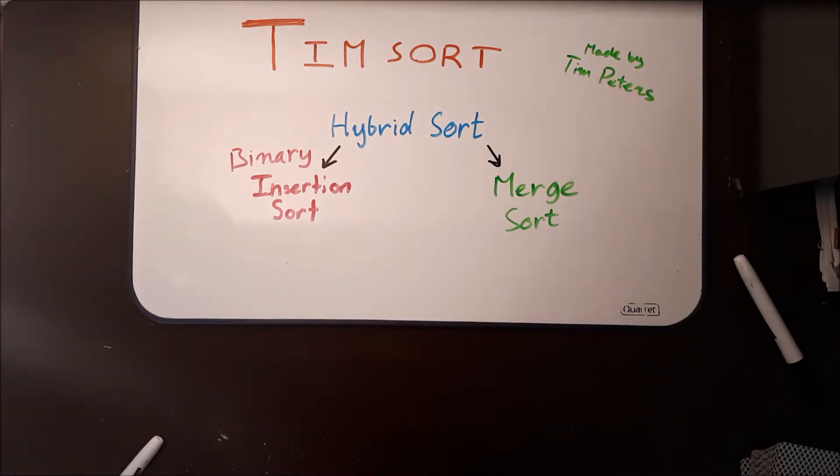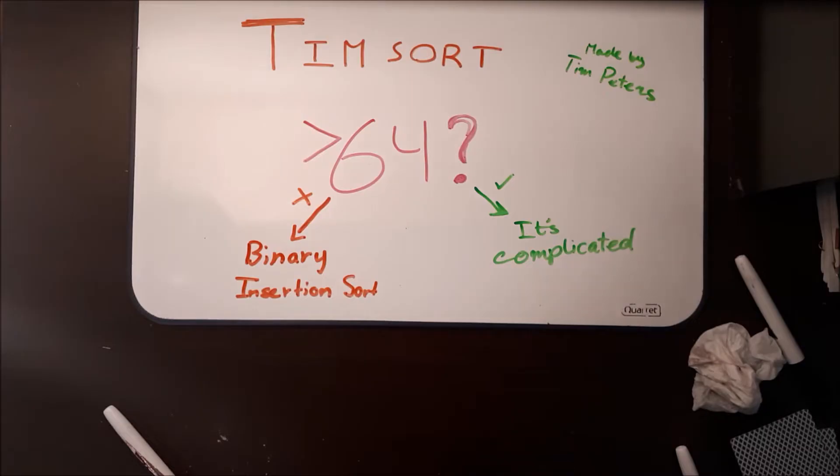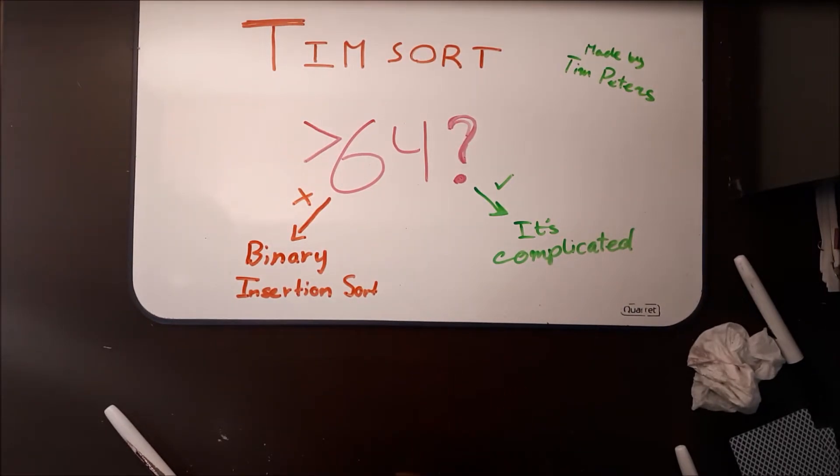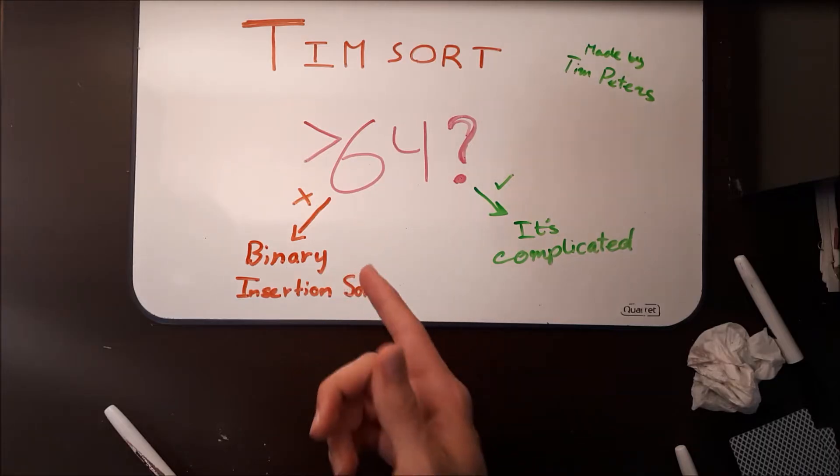Alright, now that you're either educated or just very bold, we can get into the technicalities. Timsort begins by asking one question: Are there more than 64 elements in the array? If there aren't, then life's simple. You just use binary insertion sort.